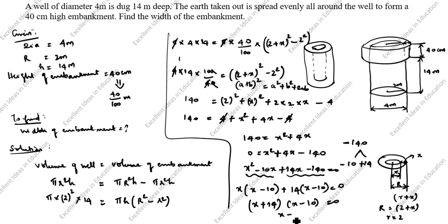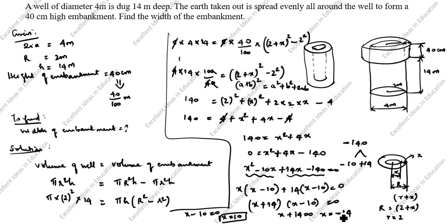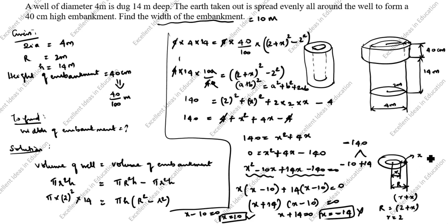From x plus 14 equals 0, x equals minus 14. From x minus 10 equals 0, x equals 10. Since x is a width, we take only the positive value and neglect the negative. Therefore, the width of the embankment equals 10 meter. Thanks for watching this video.